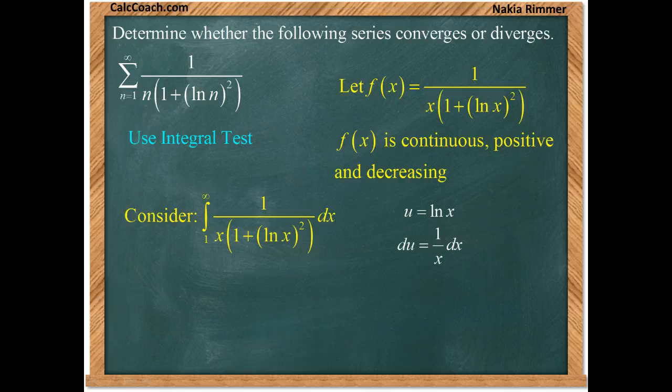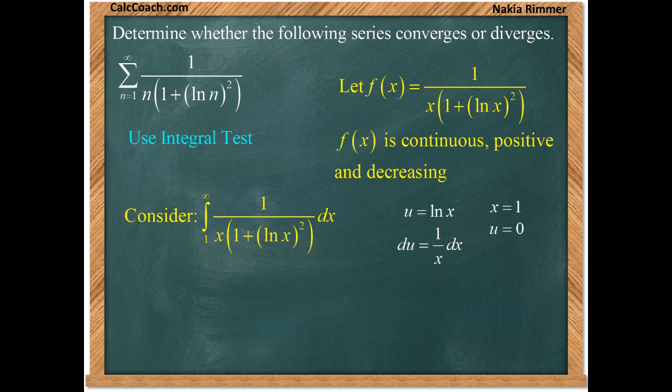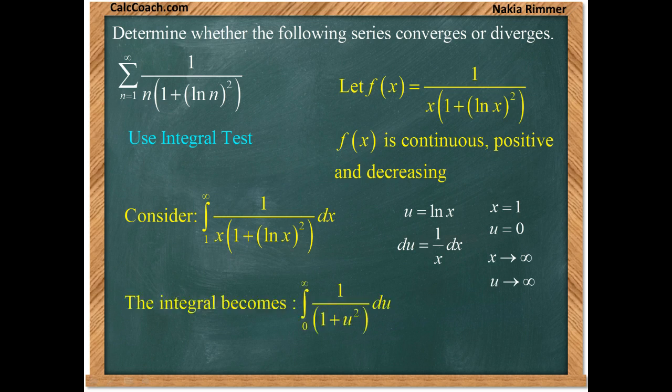Let's do a limit switch as well. When x is 1, the log of 1 is 0, so your lower limit now is going to be 0. But when x goes to infinity, then the upper limit will still be infinity. So, then the integral becomes the integral from 0 to infinity, 1 over 1 plus u squared, du. And that's going to be what we need to look at on the next slide.